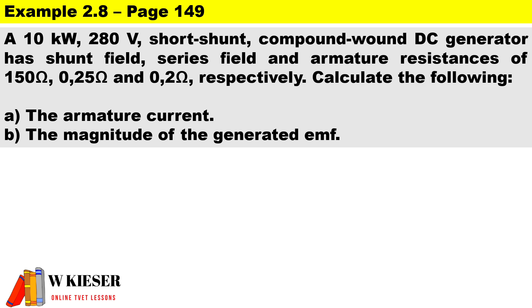This is a calculation for a short-shunt compound wound DC generator. It's an example from the textbook. A 10 kilowatt, 280 volt short-shunt compound wound DC generator has a shunt field, series field, and armature resistances of 150 ohms, 0.25 ohms, and 0.2 ohms respectively. Before we can answer those two questions, we first need to draw the circuit diagram.